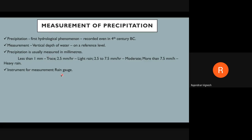The main measurement equipment is the rain gauge. There are a number of different rain gauges. In our syllabus we have two major classifications: non-recording rain gauges and recording rain gauges. Non-recording gauges come from a time when there was no technological advancement — a simple, manual technique to measure rain.